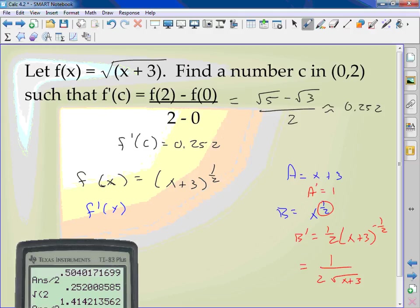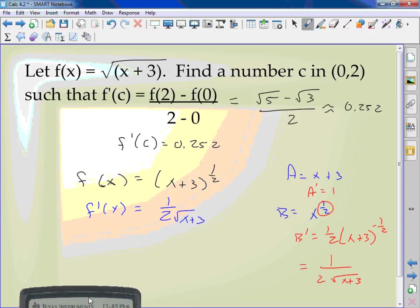And I can rewrite this so it's subtract 1 from the 1/2, so it's negative 1/2: 1 over 2√(x + 3). Multiply by 1, it's the same thing. So f' is 1 over 2√(x + 3).